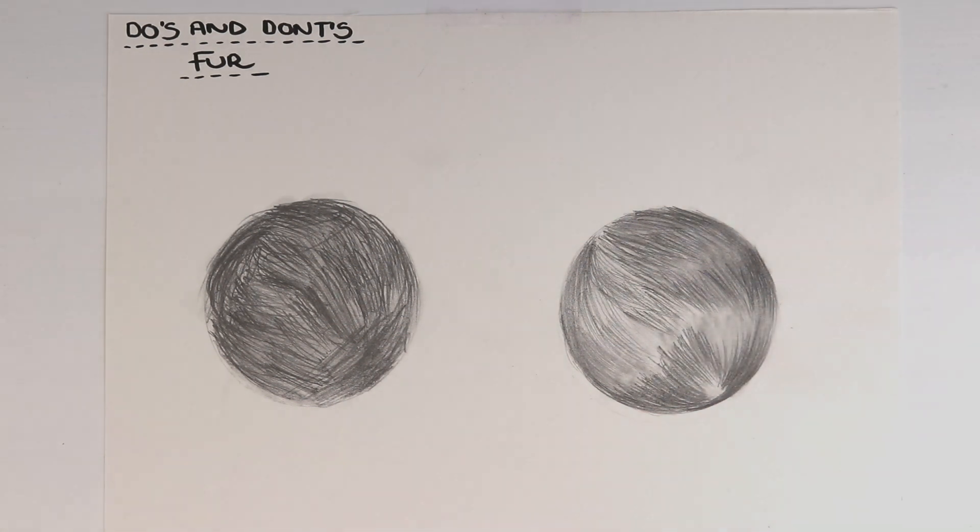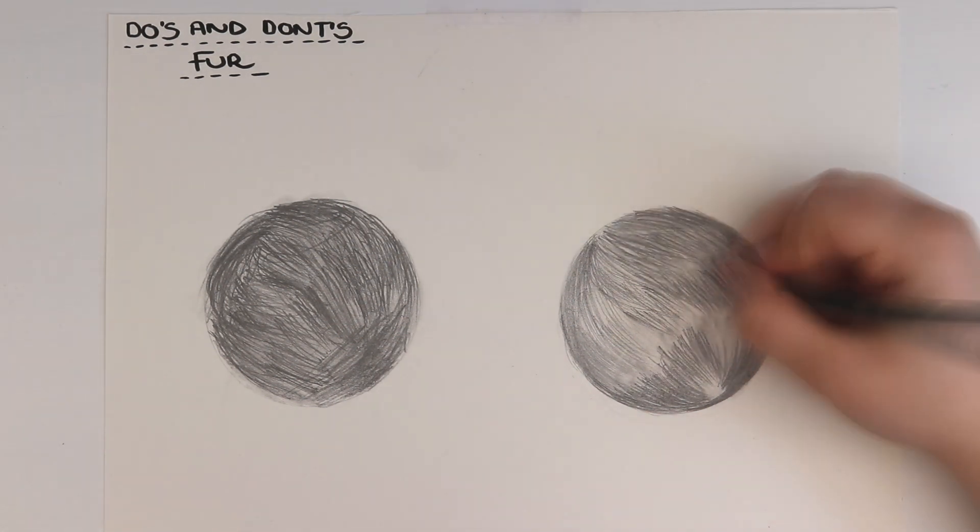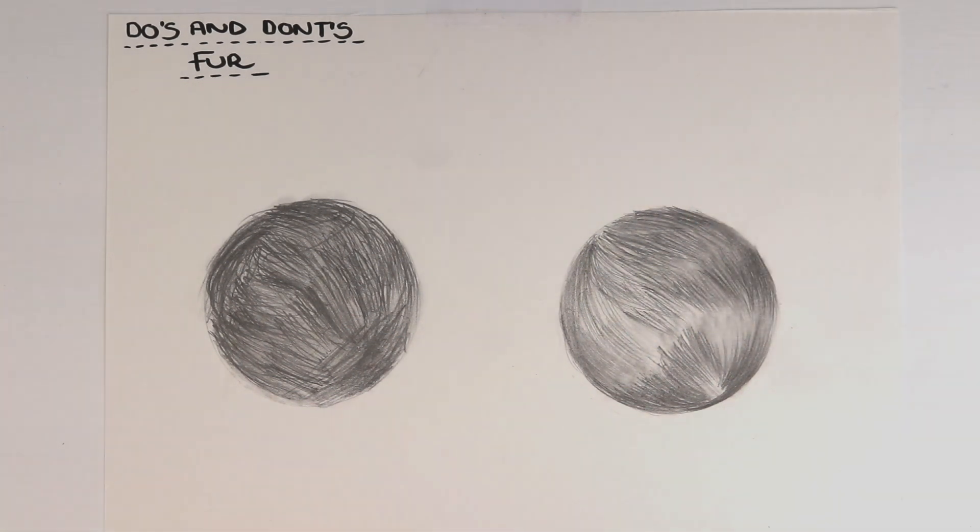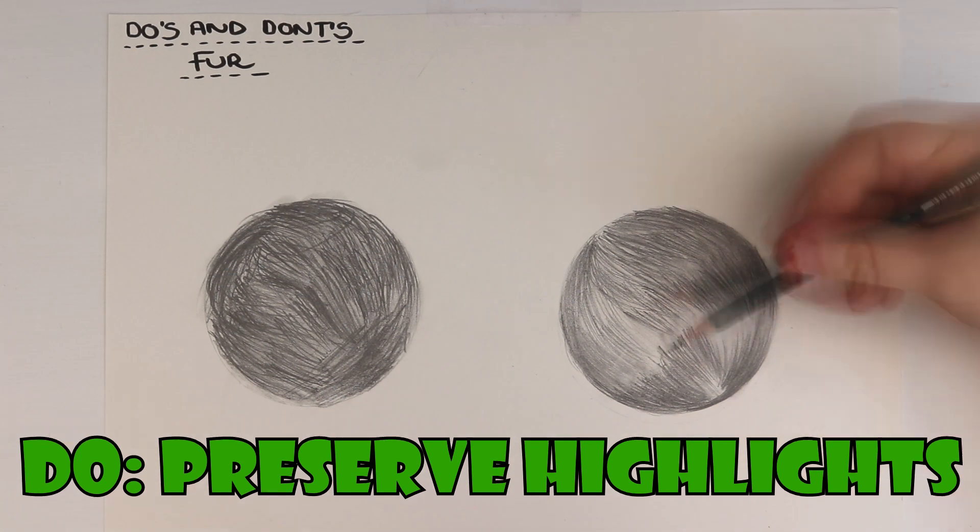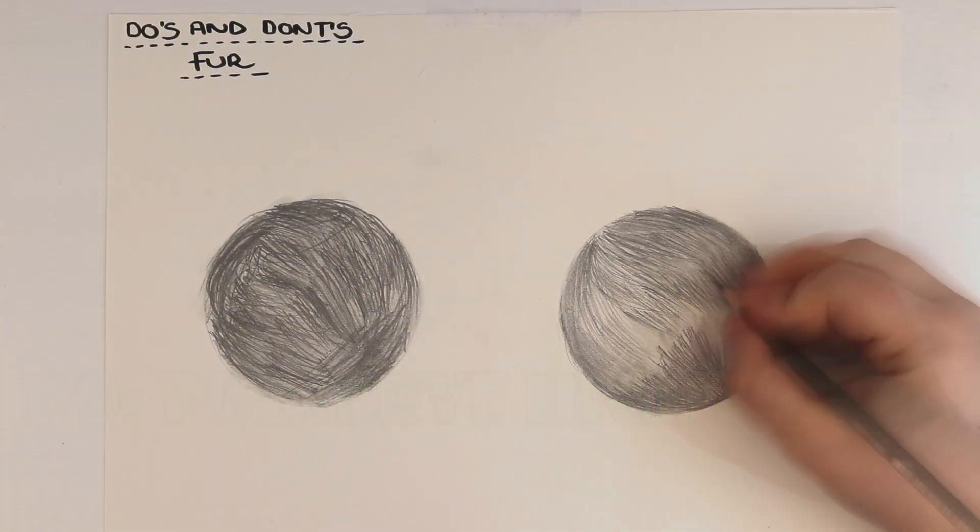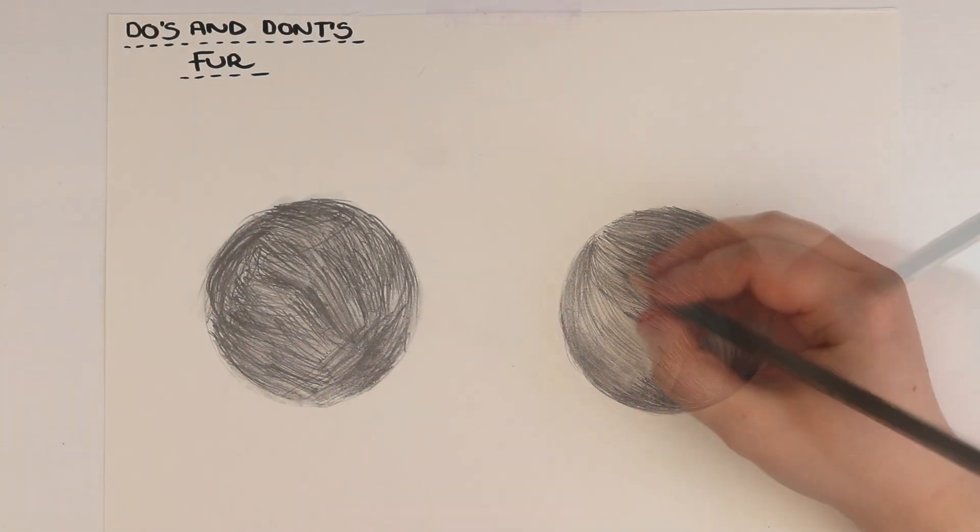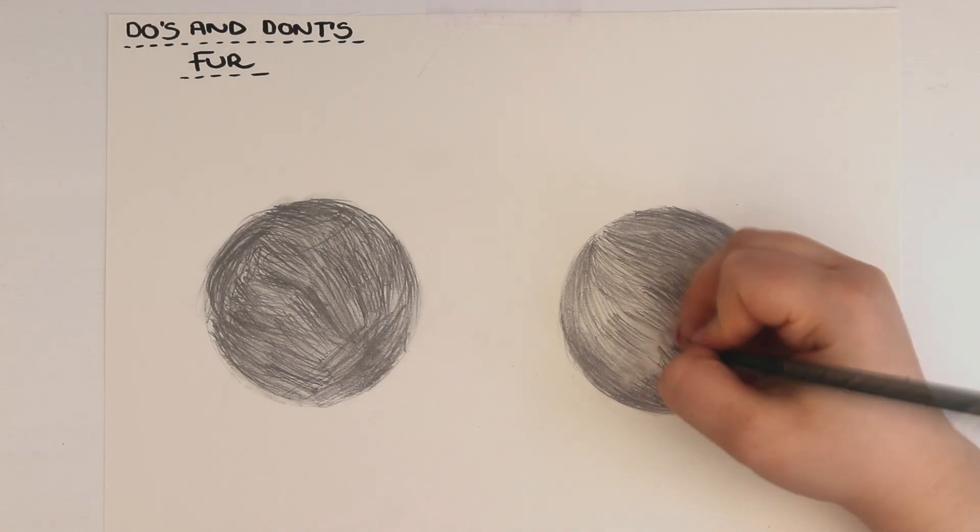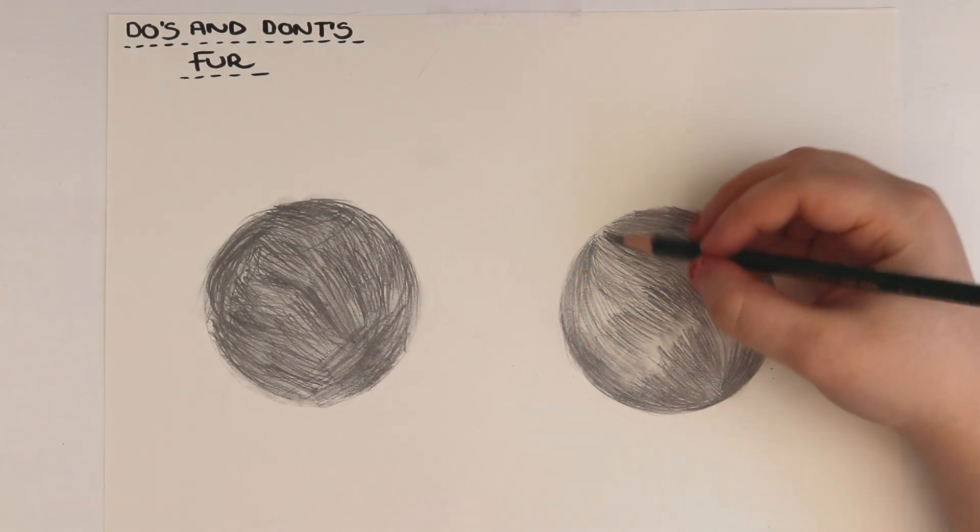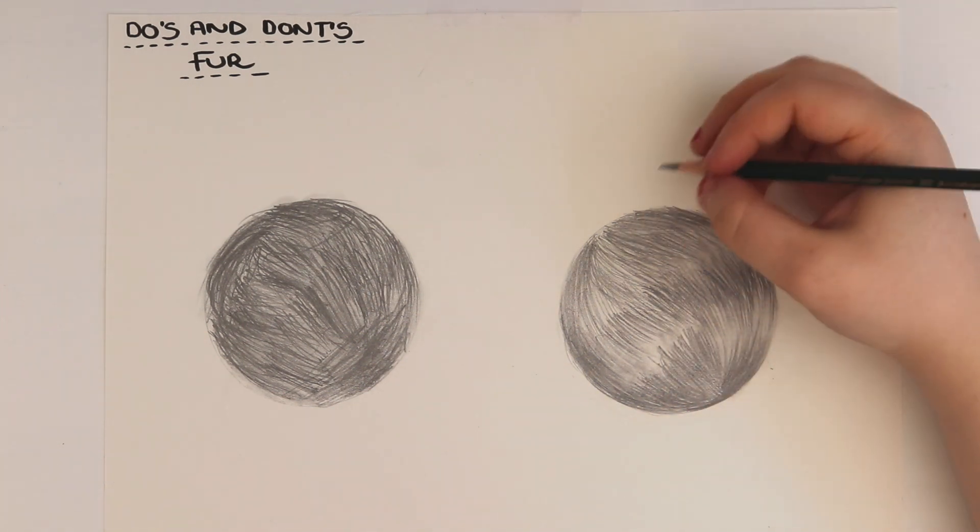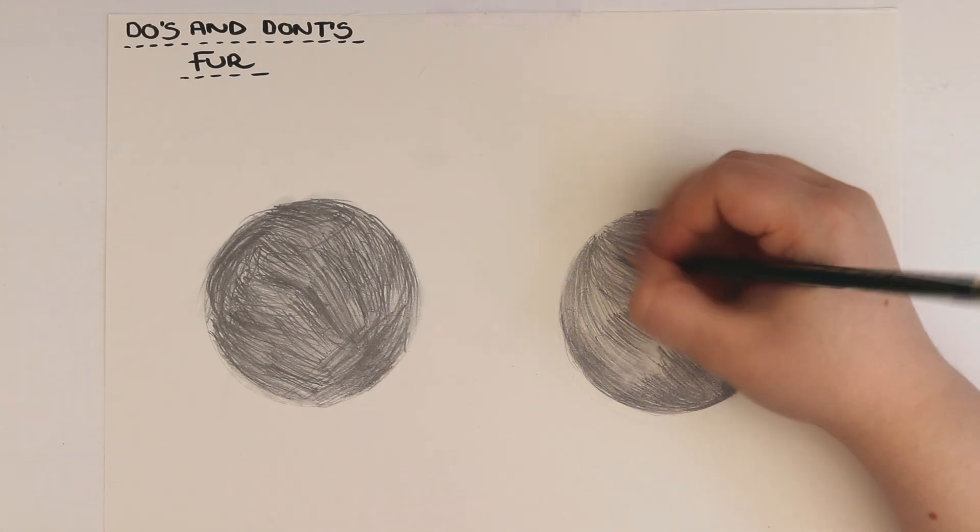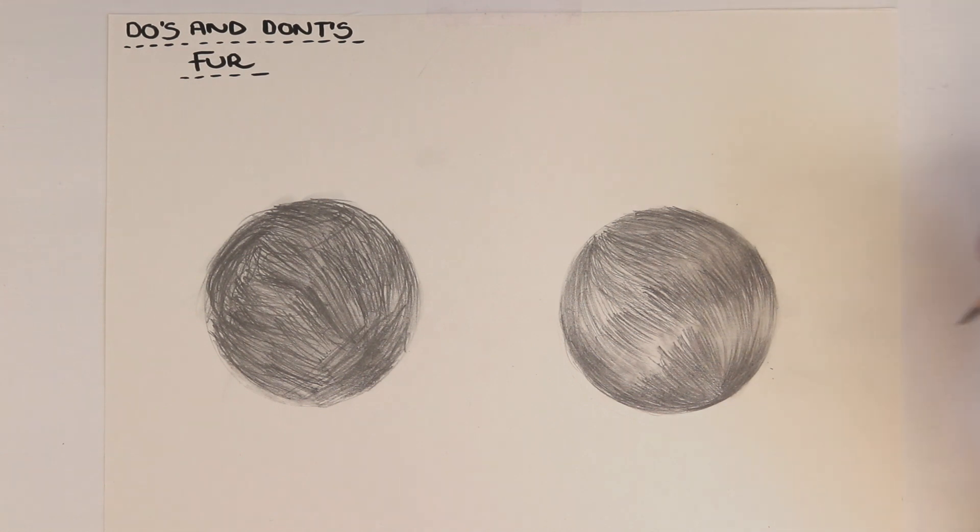Another thing you should do is make sure that you leave some areas free of graphite or with little graphite on because you want to preserve some highlights. Notice how on the do version I have left some areas quite light. Those areas are light because of the initial layers I added, and I've purposely avoided adding any more pencil values to those areas because they are my lightest areas. Later on I'm going to intensify those areas even more by using an eraser to bring the fur even further forward.